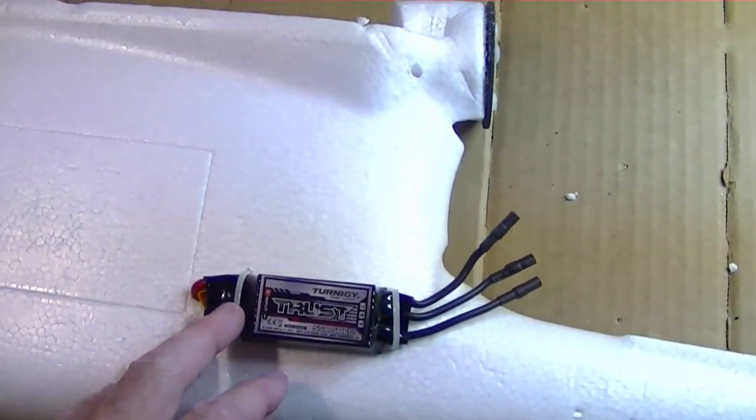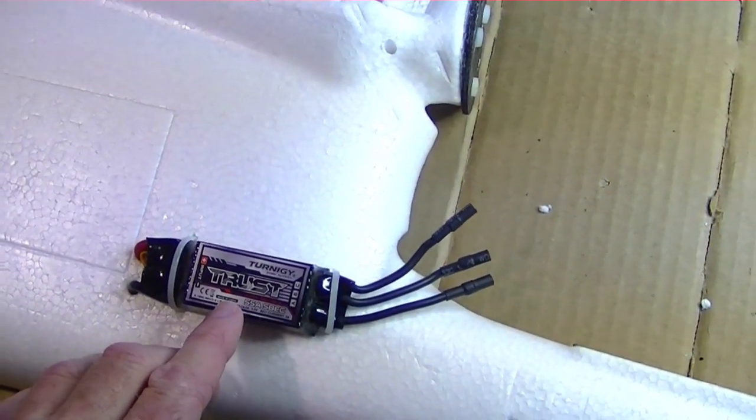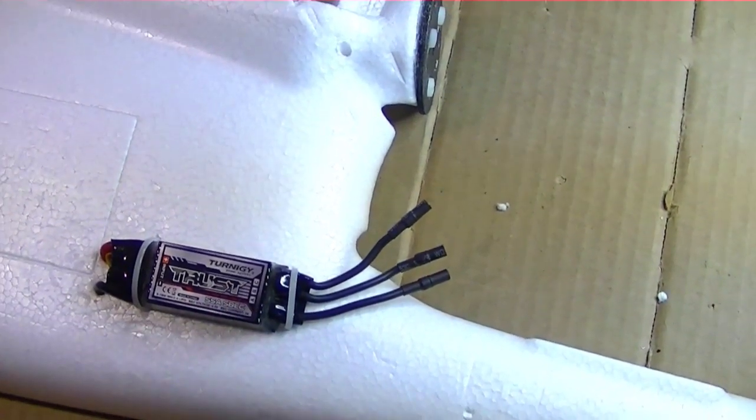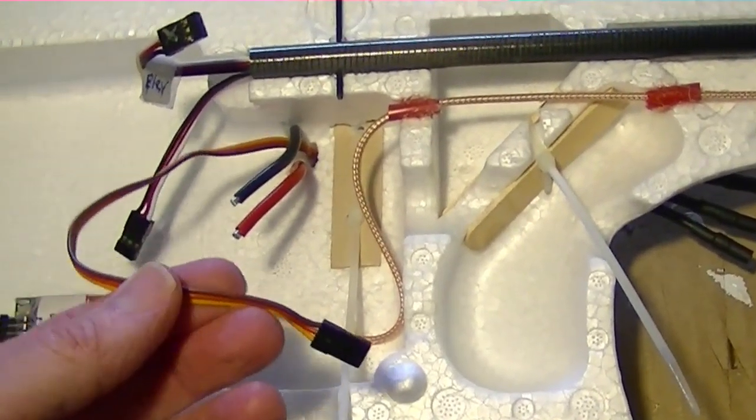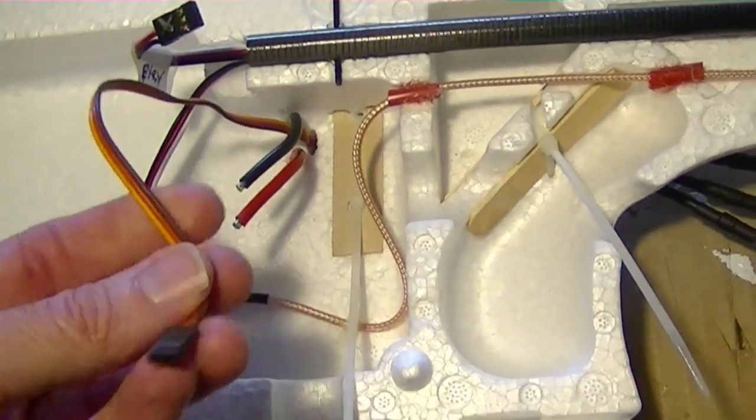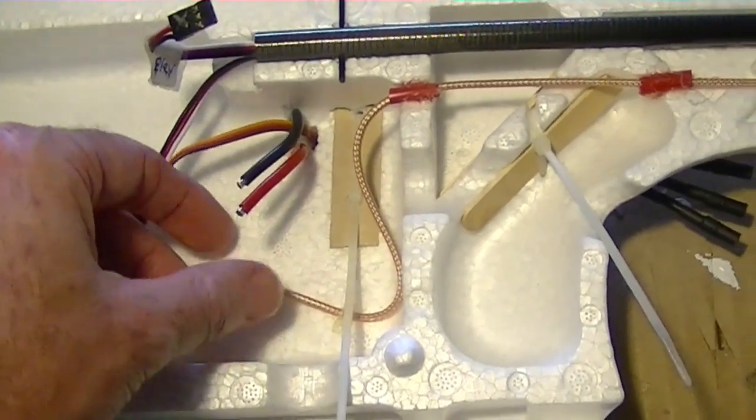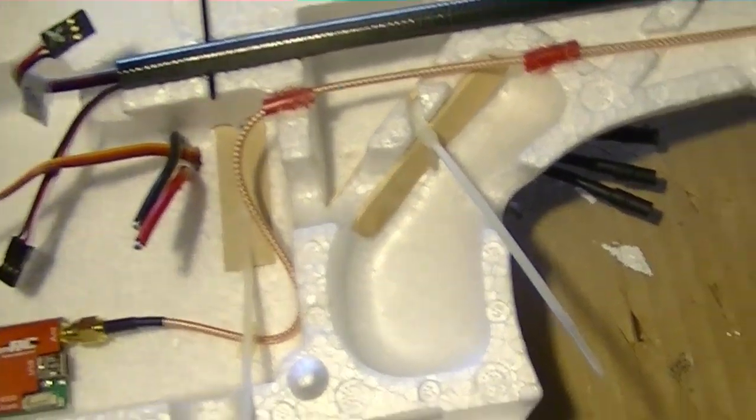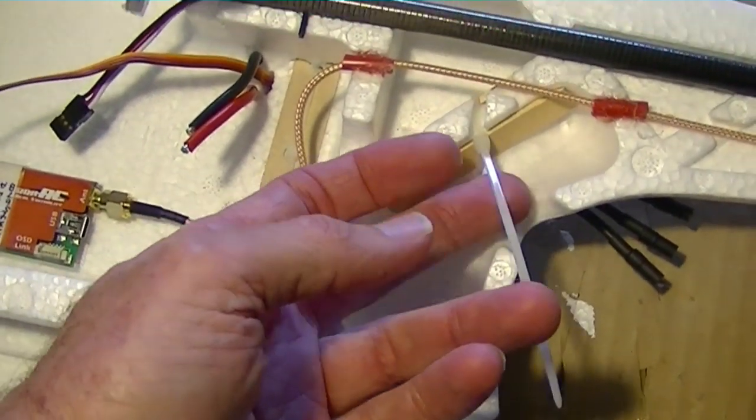Now I've tie wrapped the ESC right here with two tie wraps, and this is a Turnigy Truss 55 amp ESC with a built-in SBEC. And you can see where the wires come through right here. So there's the wire that will be going to the APM, normally goes to the receiver. And here are two wires for the battery in, which I'm going to solder on this plug. It's an XT60. And the ESC is held on by two tie wraps right here. I'm going to cut the ends off these soon.